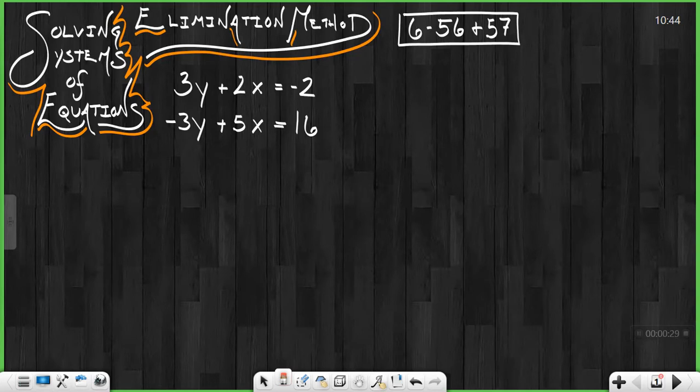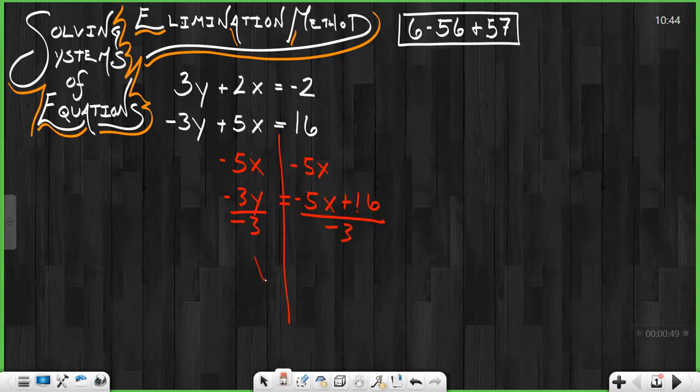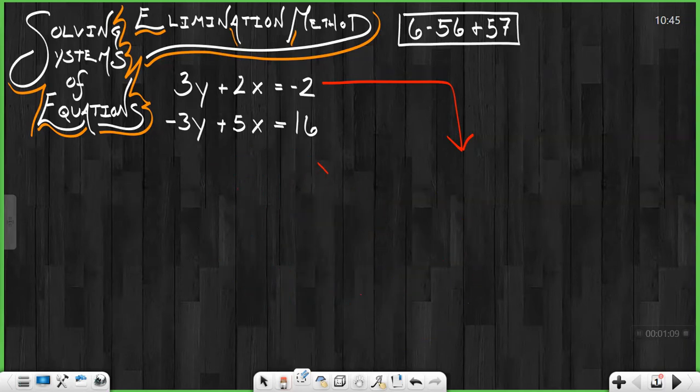So in 56 they want you to recognize, and don't write this down, I'm doing it in red, but they want you to recognize that in order to solve this I would have to start by getting y alone, subtracting 5x from each side giving me negative 3y equals negative 5x plus 16, and then we divide by negative 3 on both sides. We get y equals 5 thirds x minus 16 thirds and that's a nasty equation to work with. It's got fractions. They want you to do the same thing with this equation and then put them together to solve. That's a long process. That is not necessarily the way we want to go. So nothing to write down for 56 except we don't want to go that way.